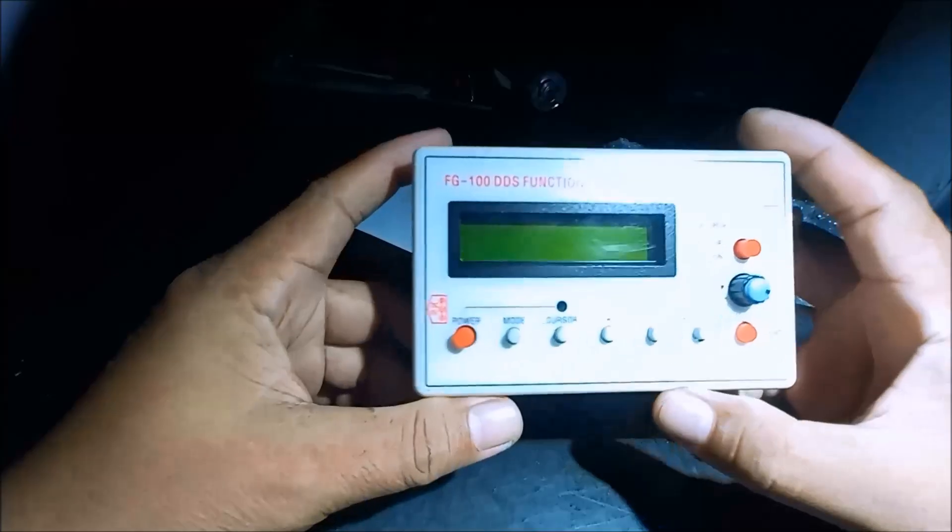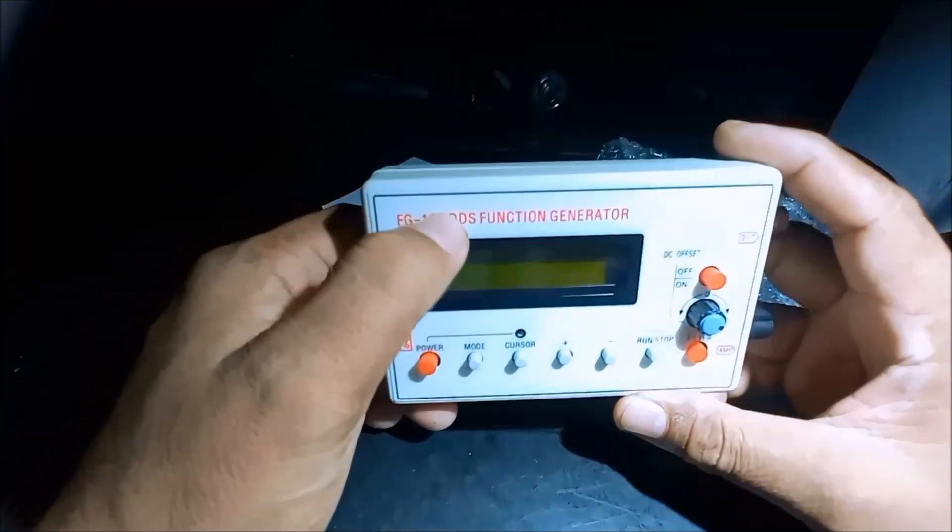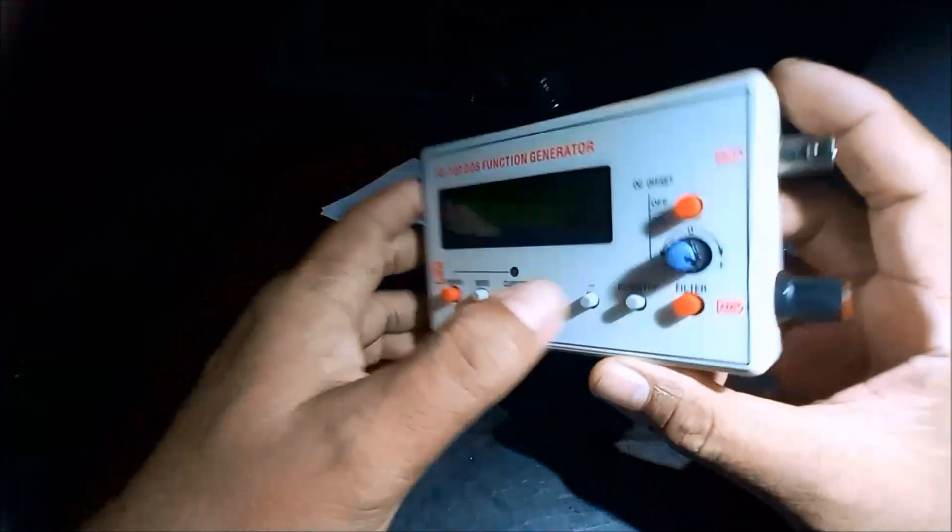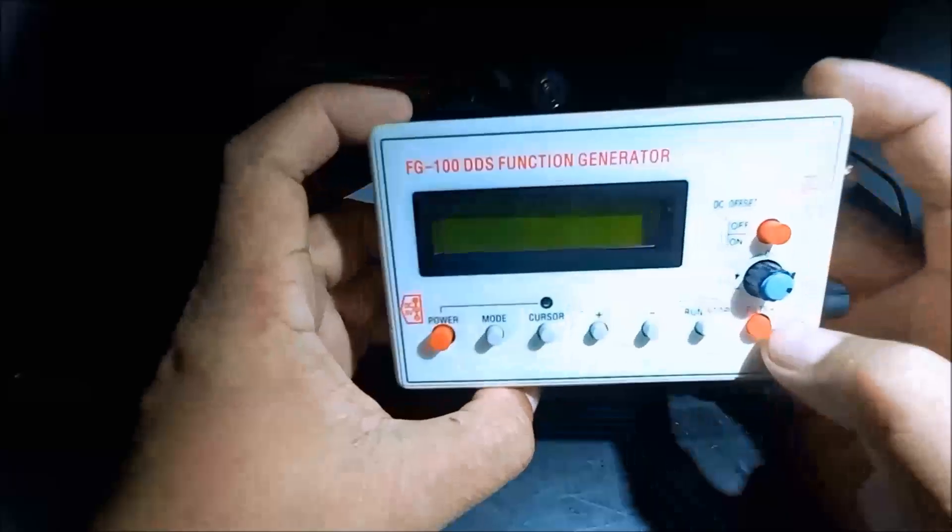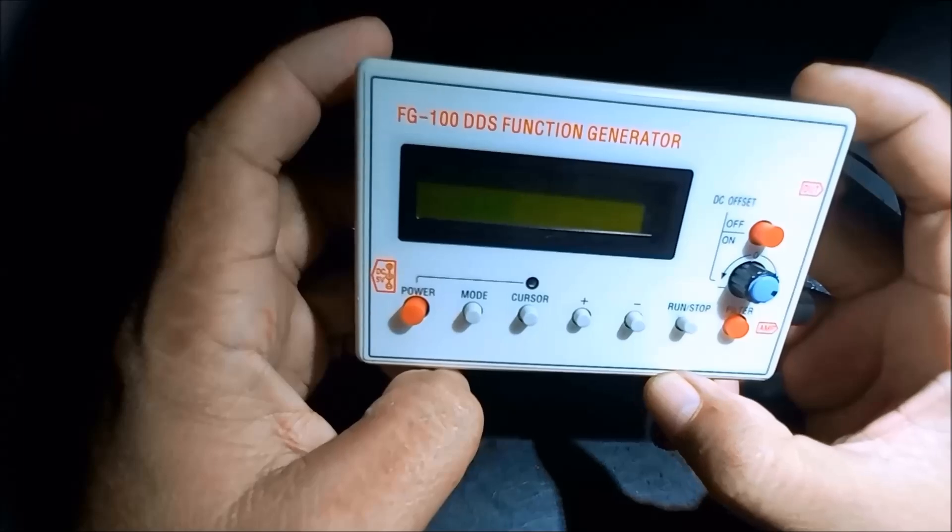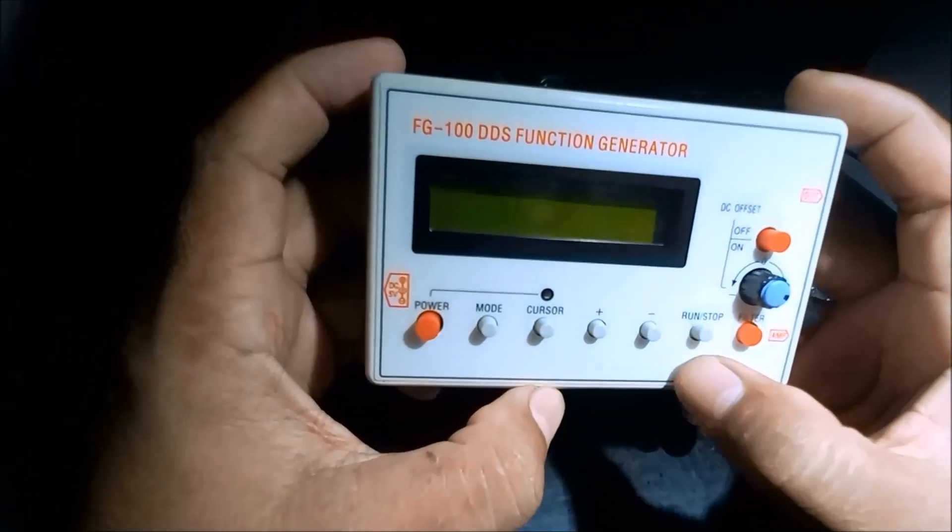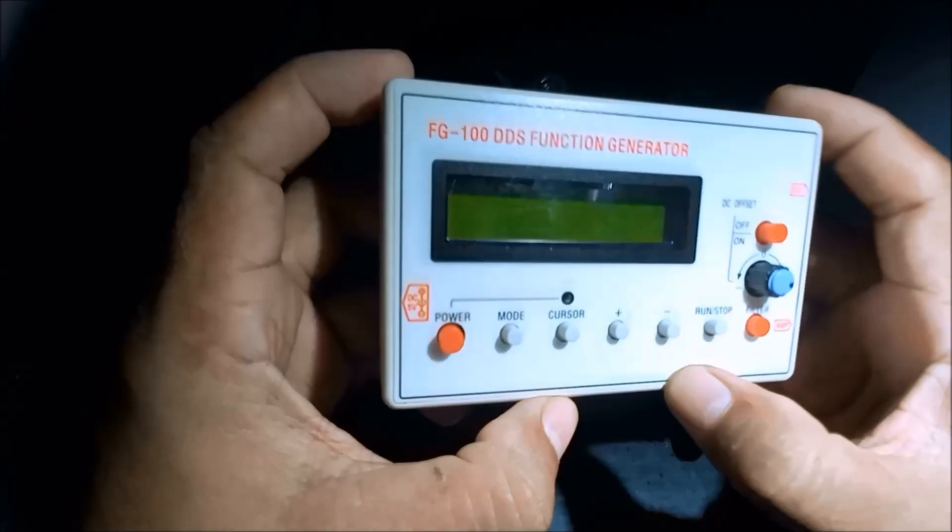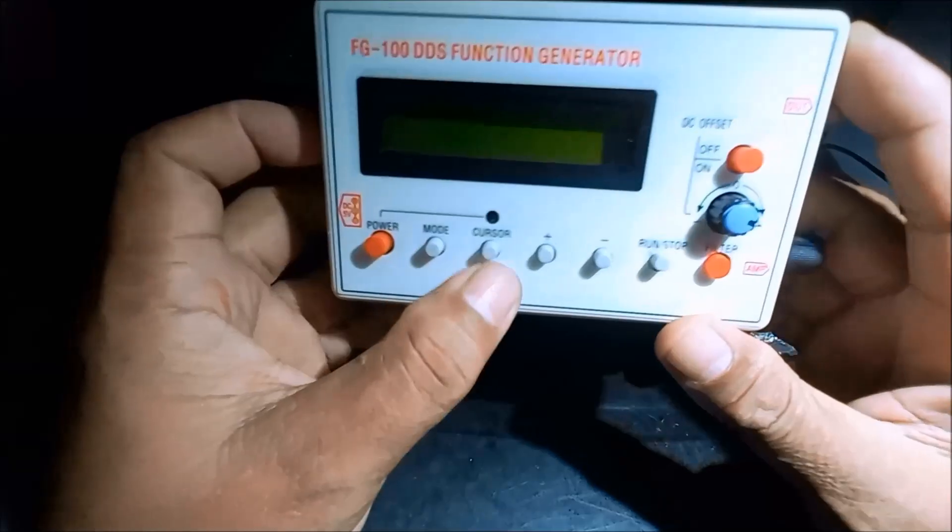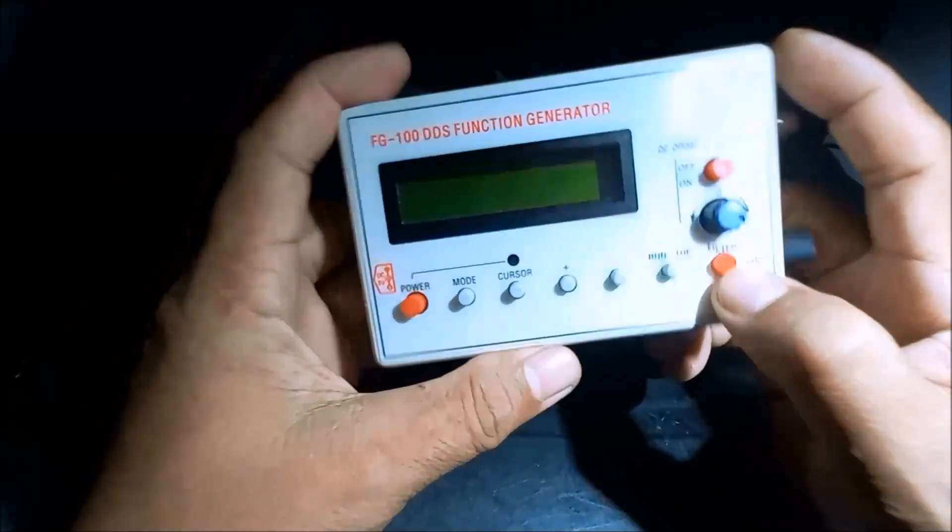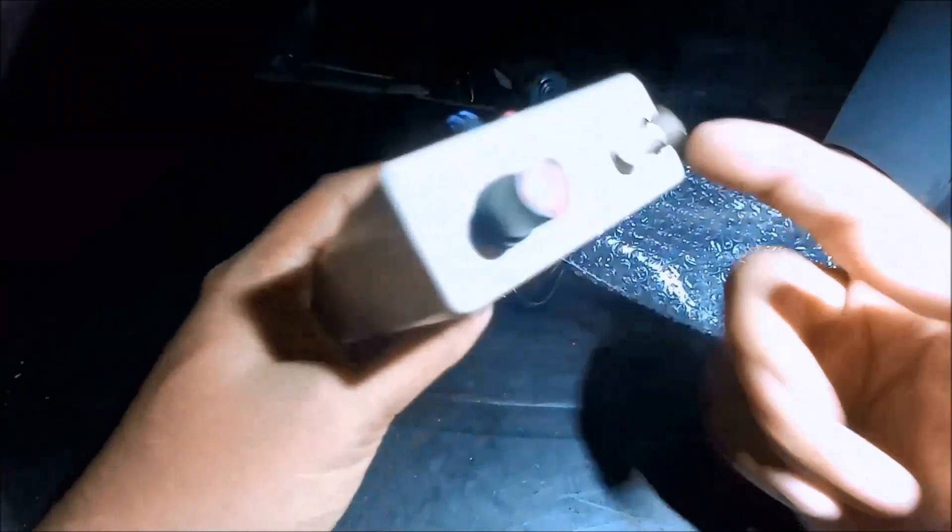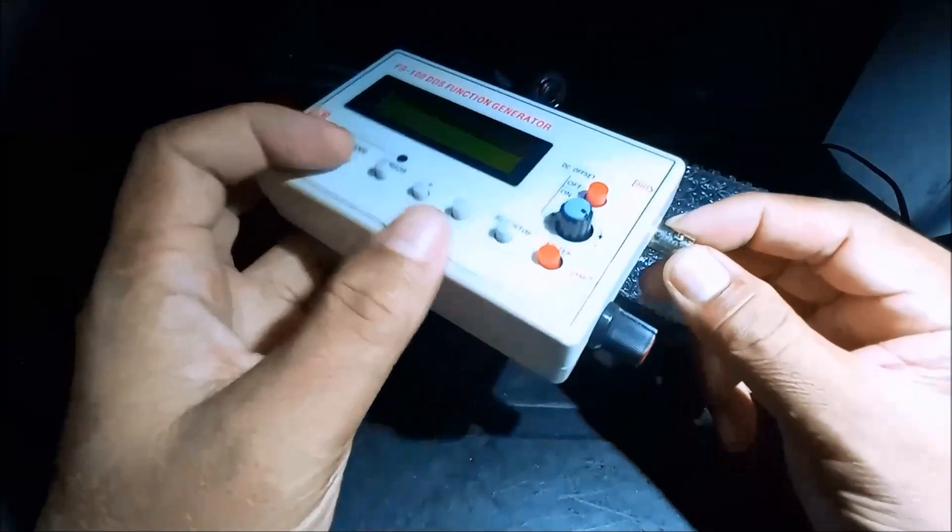We have a new gadget, FG100DDS function generator. The power, mode, cursor, run, stop, filter, then for the DC offset, then for the out, that is the BNC, bayonet nut connector.